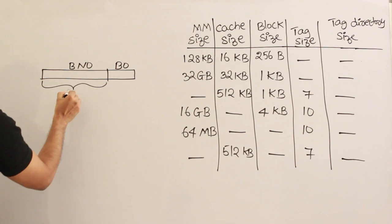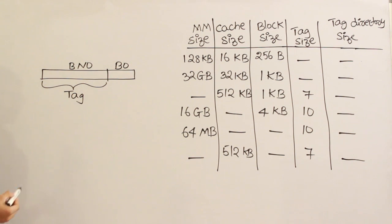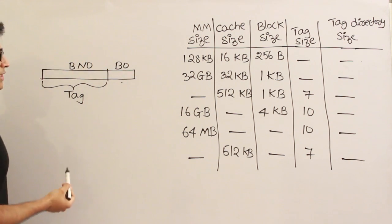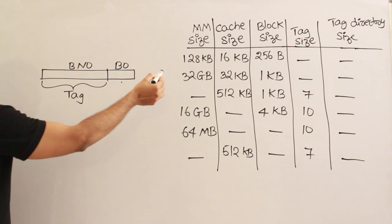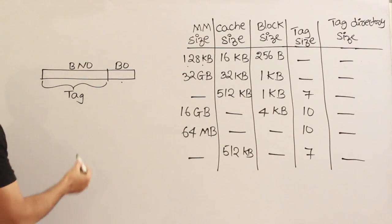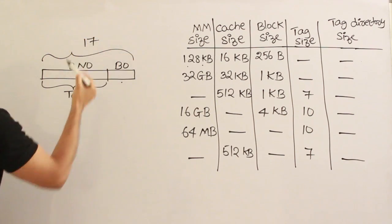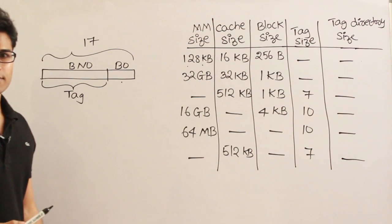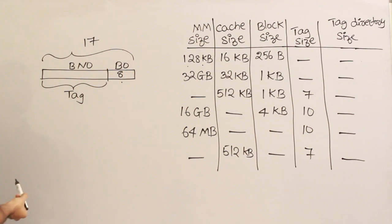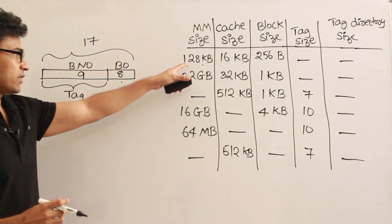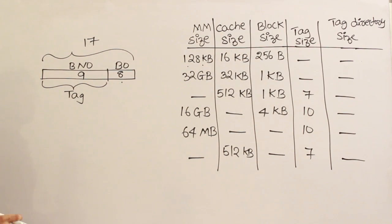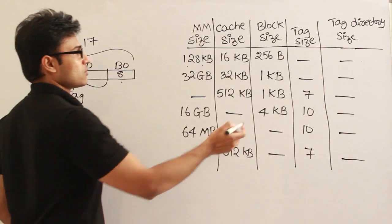The block number acts as the tag, and the block offset depends on the size of the block. The entire physical address is 17 bits since main memory is 128KB = 2^17. The block size is 256 bytes = 2^8, so the block offset is 8 bits. Therefore the block number is 17 − 8 = 9 bits, and the tag size is 9 bits.